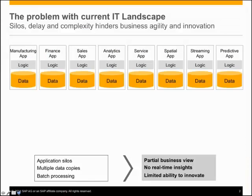The problem with our current IT landscape is that we've built a number of applications — whether manufacturing, finance, sales, services, or analytic apps like predictive, spatial, or streaming — all discretely, tying data, logic, and application closely together. That works great for each specific application, but it creates silos, a bunch of data copies all over the enterprise, and batch processing.